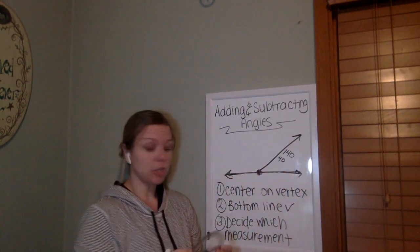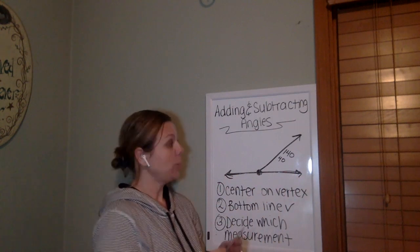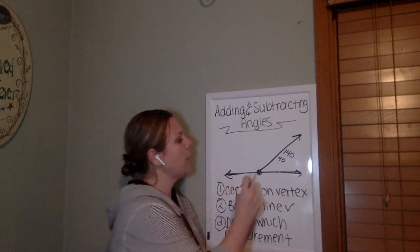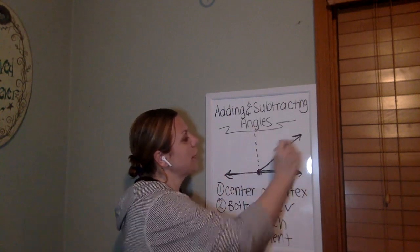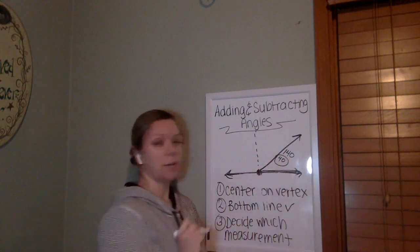Well, the protractor is not sure if you're measuring an obtuse angle or an acute angle. So the protractor is telling you, well, if it's obtuse, it's 140. And if it's acute, it's 40. And we know that this is an acute angle because here's my 90 and an acute angle is less than 90. So I'm going to take my 40 degree measurement.